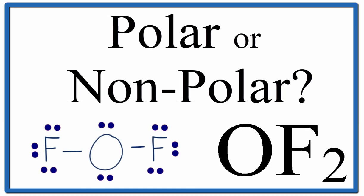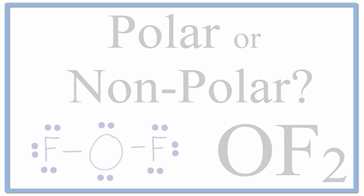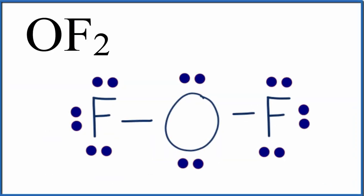So to determine the polarity of OF2, oxygen difluoride, we'll first need to look at the Lewis structure. That'll give us an idea of where the bonds are, how the atoms are arranged, and where those lone pair electrons are at. So when we draw the Lewis structure for OF2, it'll look like this.